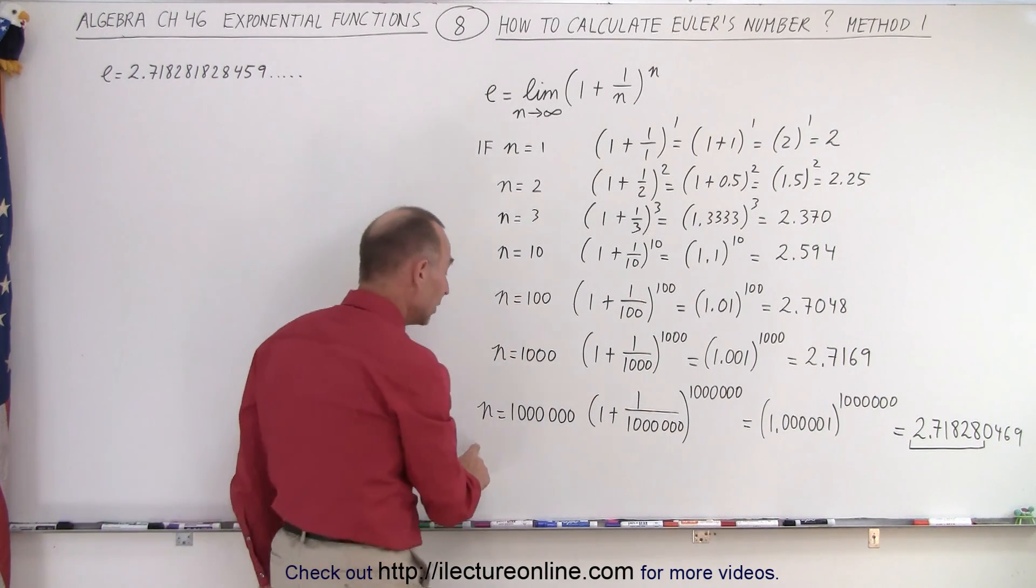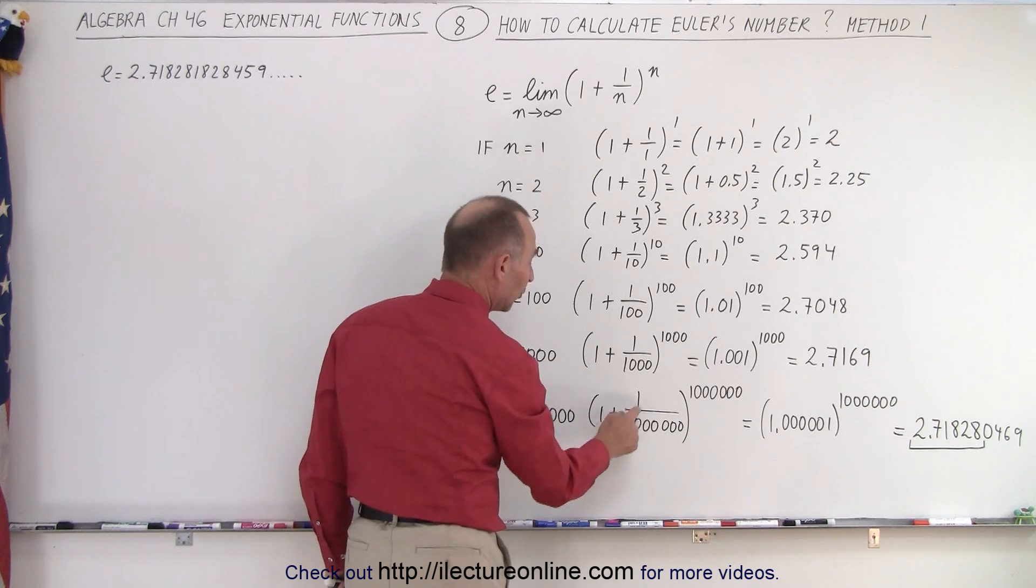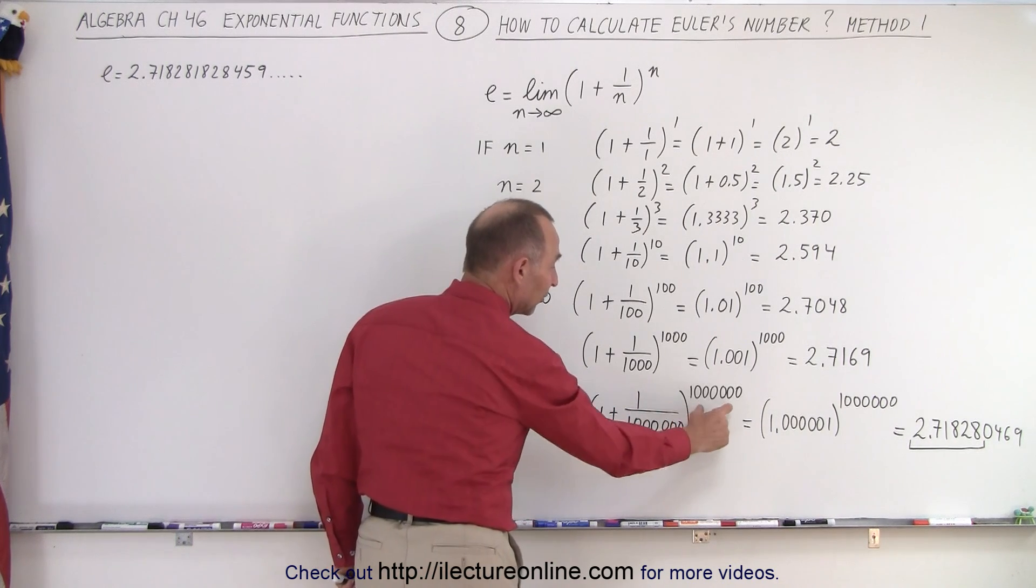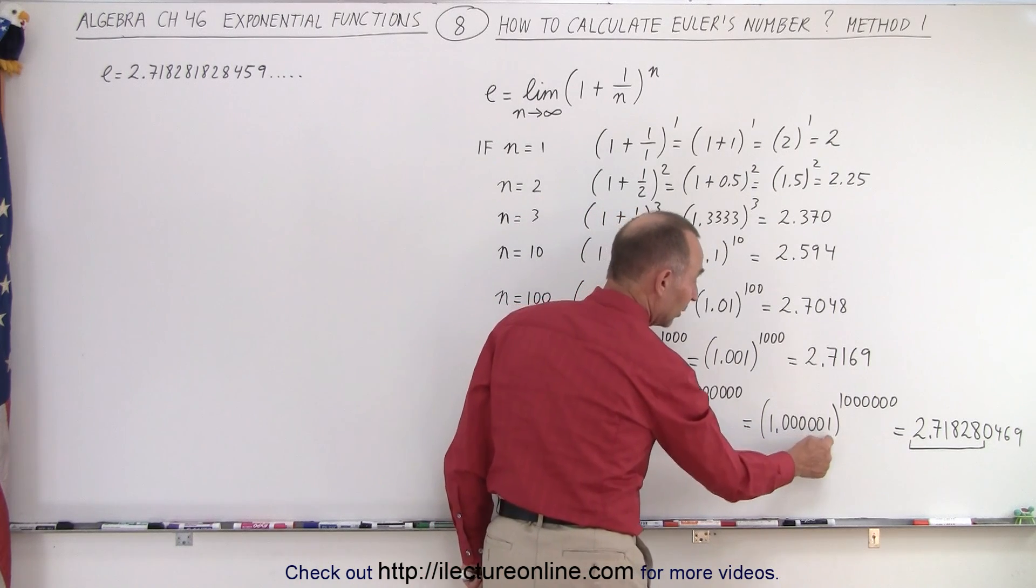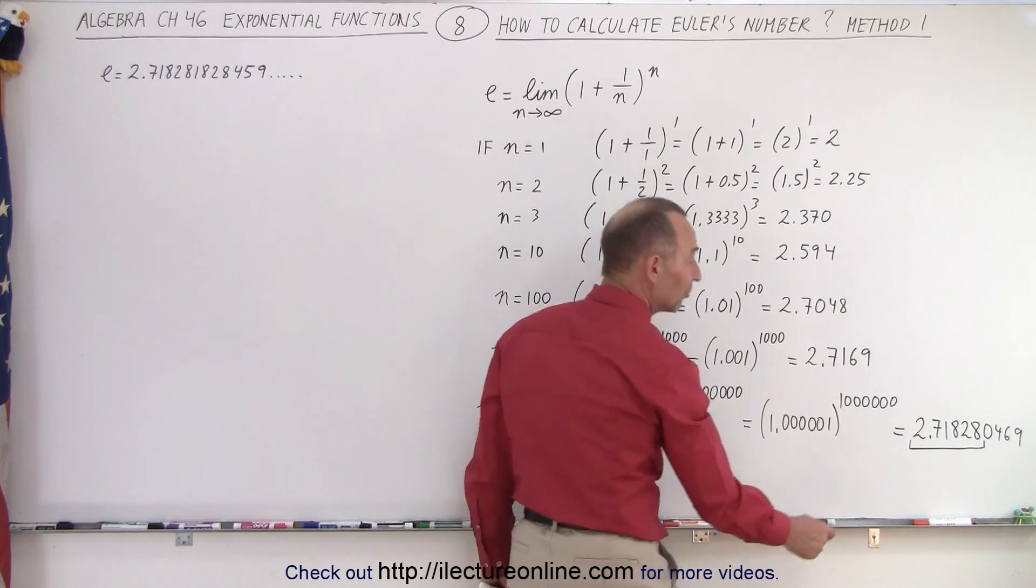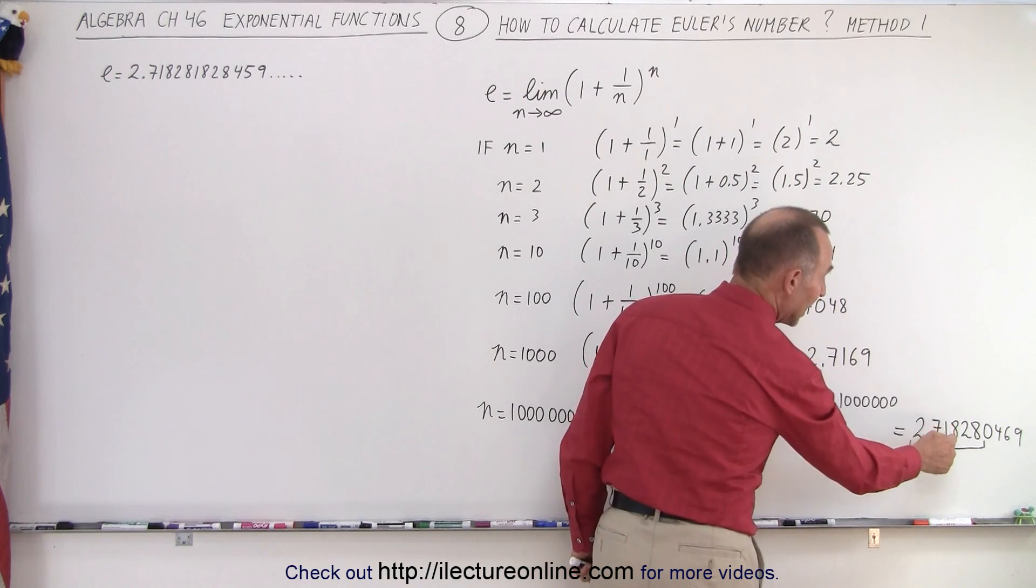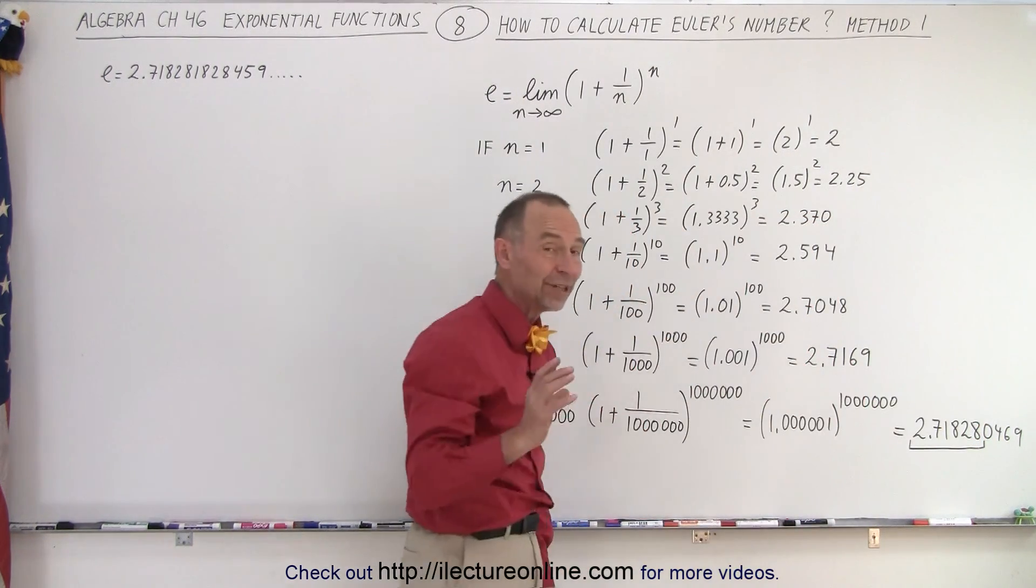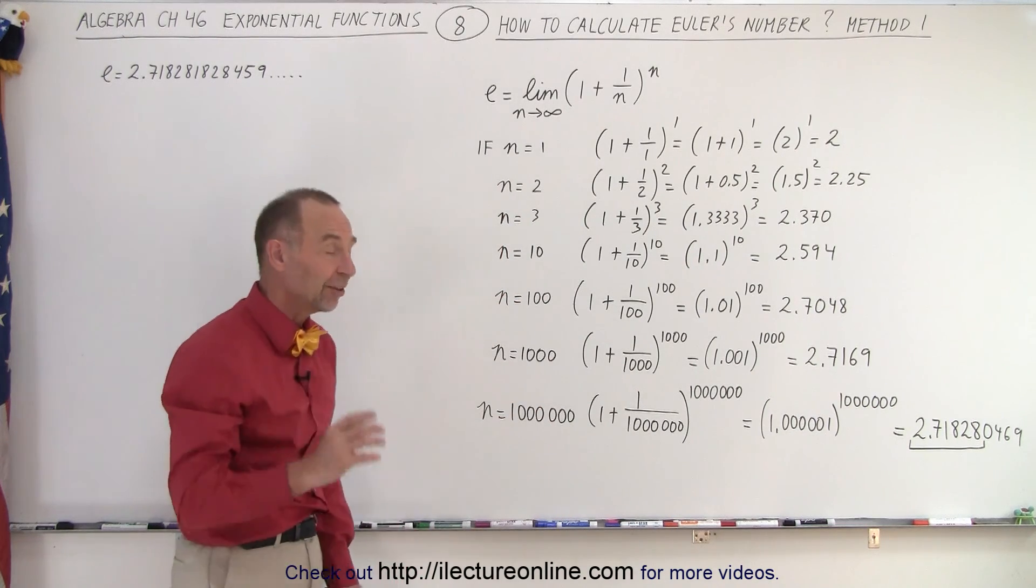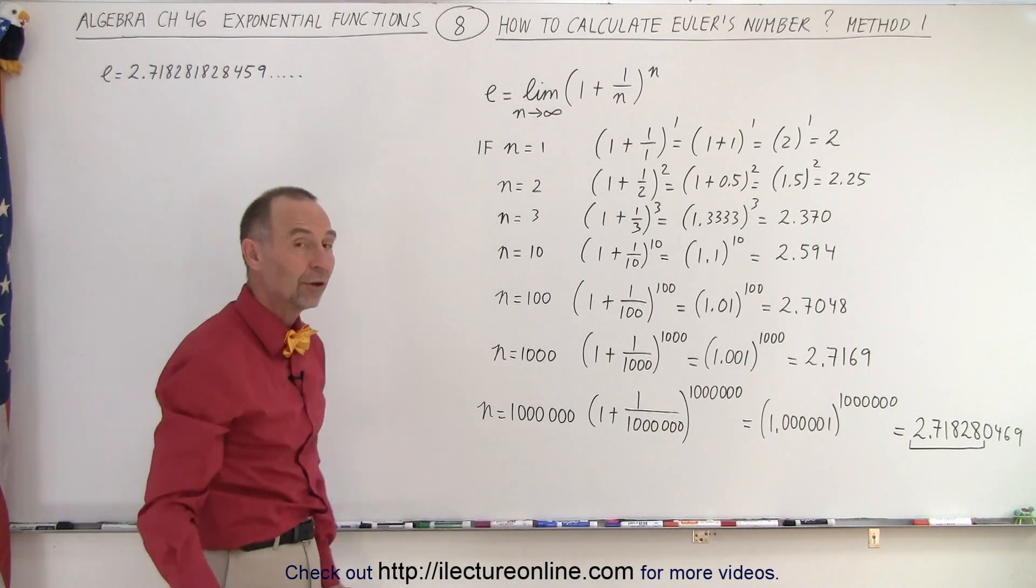When we use n equals 1,000,000, now you can see 1 plus 1 over 1,000,000, the whole thing raised to the million power, which is 1.000001 raised to the million power, gives us 2.718280469. Notice Euler's number is correct to the first five decimal places when you let n equal 1,000,000.